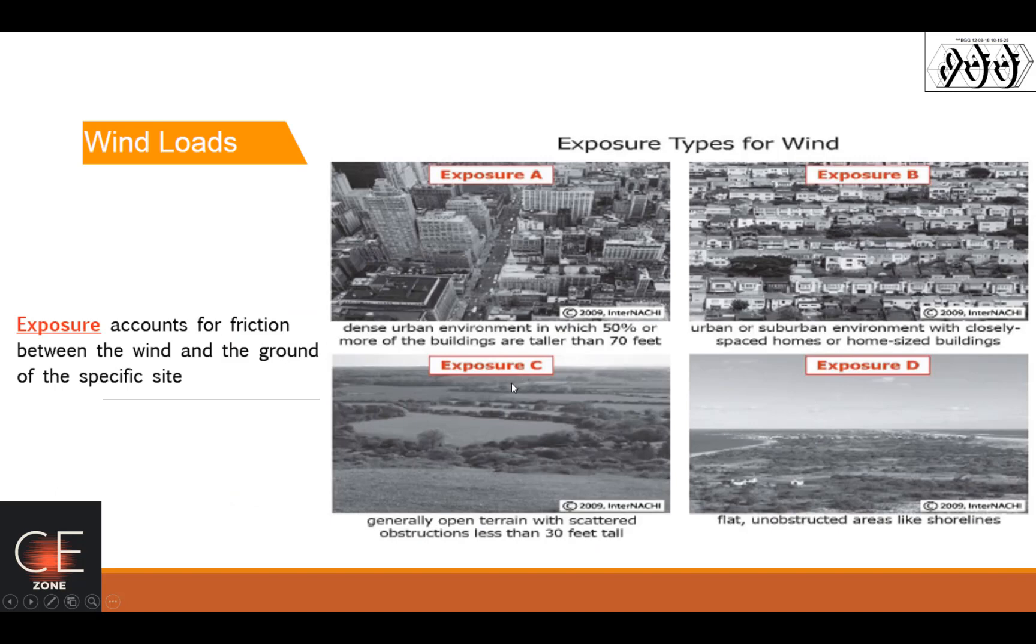The exposure, this accounts for the friction between the wind and the ground of the specific site. You have exposure A, B, C, and then D. For exposure A, dense urban environment in which 50% or more of the buildings are taller than 70 feet or 21 meters.